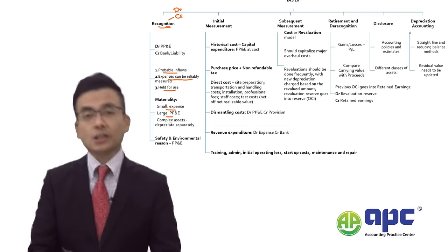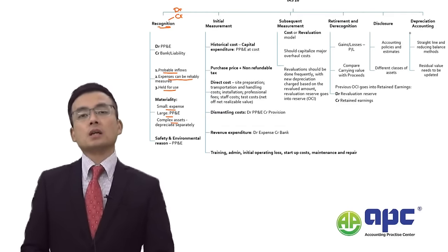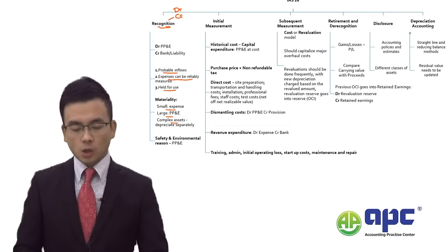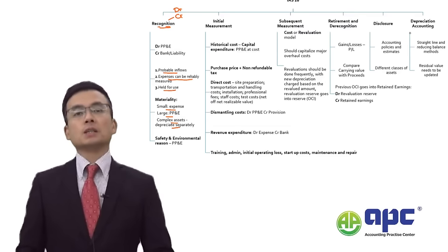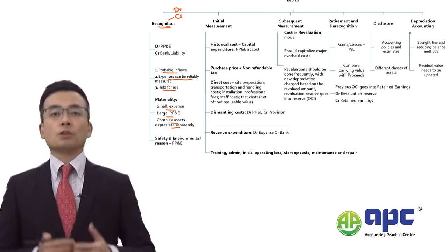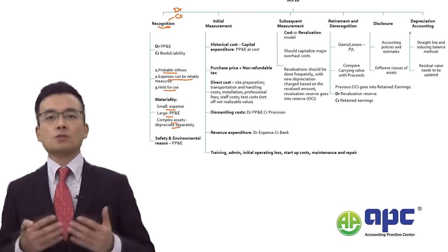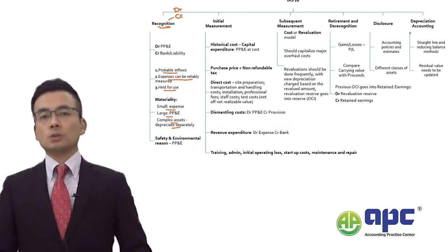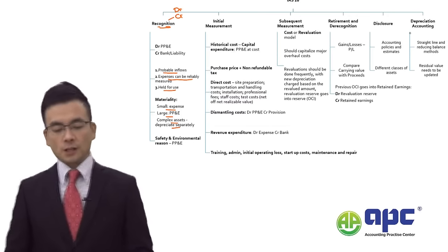For a complex asset — for example, an aircraft — we have different elements, so we need to depreciate each part of the PP&E separately. For example, the engine will be depreciated using the straight-line method over 20 years, and tables and chairs depreciated over 30 years.